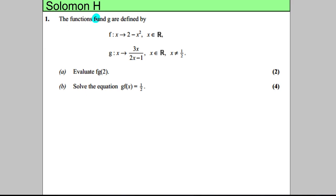We've got two functions, f and g, defined as follows. Function f is quadratic, and x can take any number—that's the domain. Function g is 3x divided by 2x subtract 1. Notice x can be any number except x cannot equal a half. It says evaluate f of g of 2.